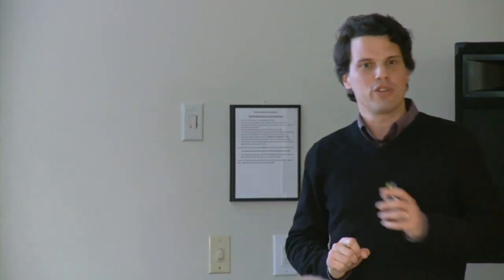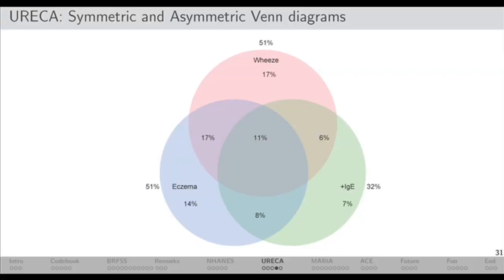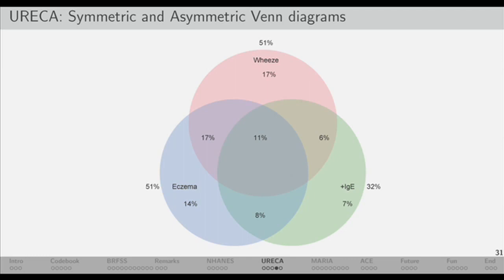This is a Venn diagram — we all learned these early. They were invented in 1890 and are still in use today. Here we have three outcomes: wheeze, eczema, and positive IgE (allergy). When you have several outcomes, any investigator will ask: how many people have two, how many have one, how many have all three? The investigator told us to do this, and then he said: this standard Venn diagram doesn't work for me. What I want is a Venn diagram proportional to how many people are in each cell, because that is the true display of the data.